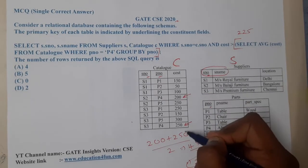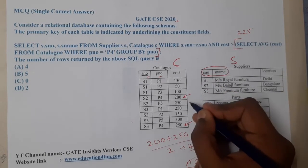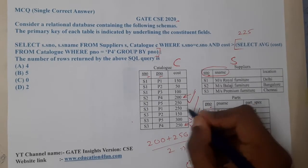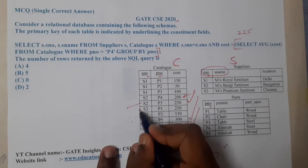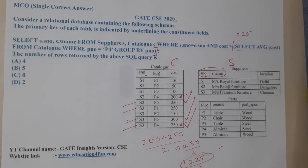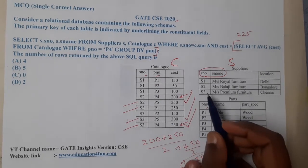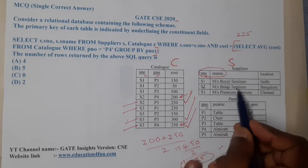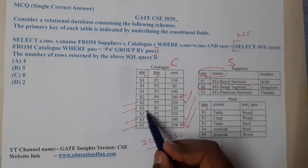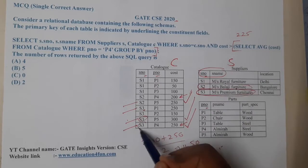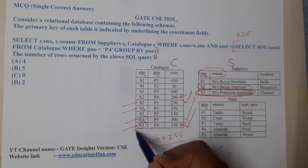We now identify all entries where cost is greater than 225. There are 4 such entries in the table. Printing the results: for S2 we print S2, Miss Bajaj Furniture once; for S3 we print the corresponding item three times — once each for P1, P5, and P4 — giving a total of four prints.